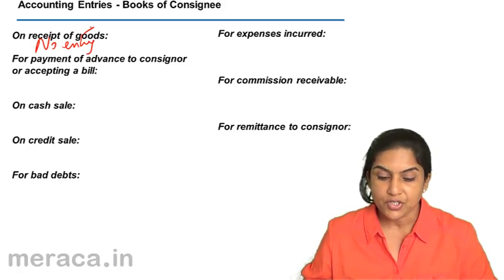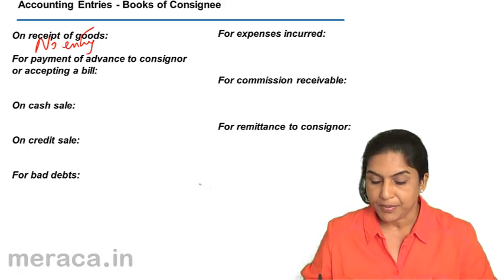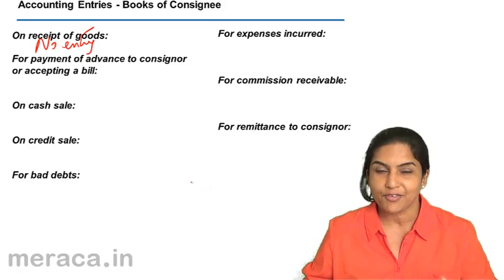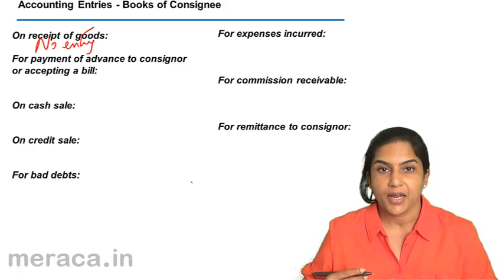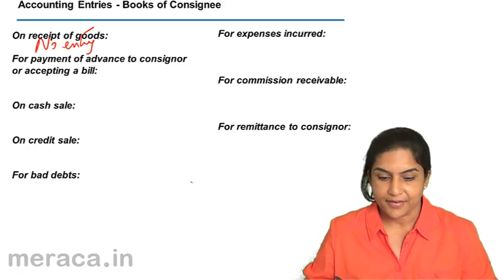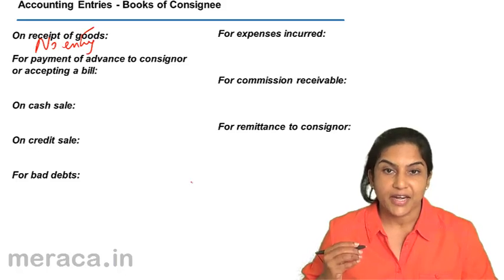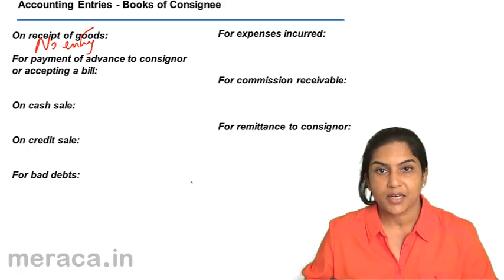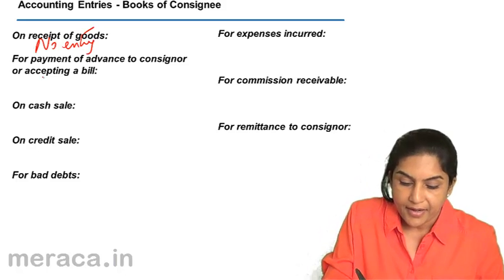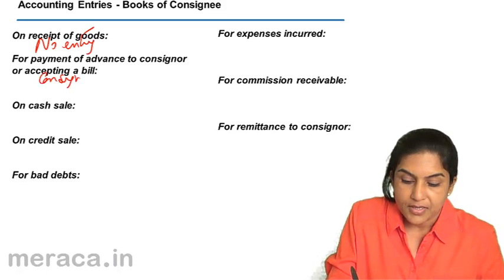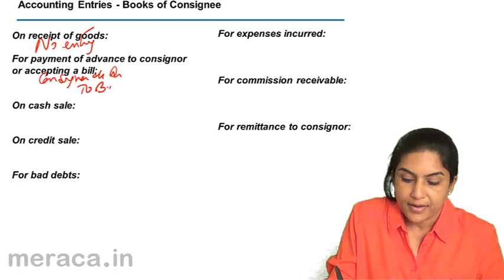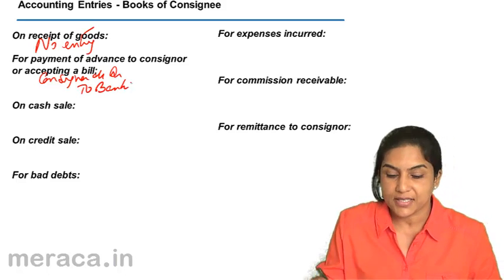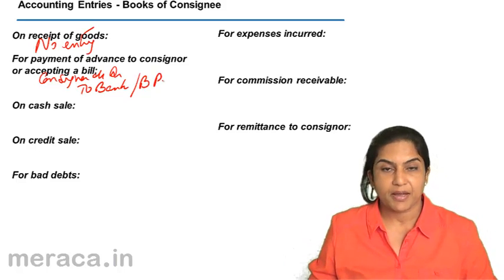For payment of advance to the consigner or accepting a bill of exchange: when the goods are received, some advance or security deposit may have to be paid to the consigner. In such a case, if any advance is paid, the entry would be consigner account debit to bank. And if a bill has been accepted, it would be to bills payable.